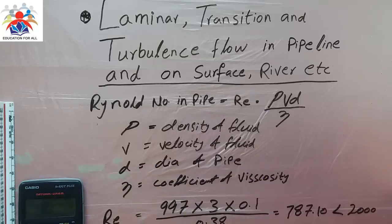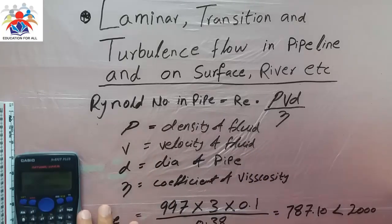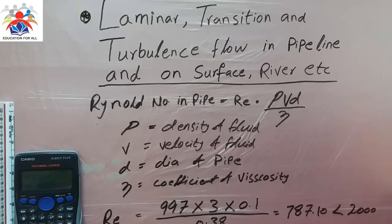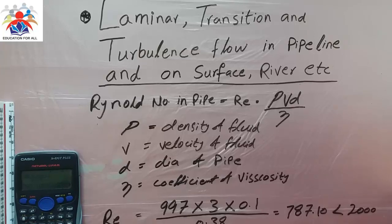Now if we have to calculate the Reynolds number in a riverbed, the formula is slightly different. The Reynolds number equals density of fluid multiplied by velocity of fluid multiplied by a length, divided by the coefficient of viscosity. Instead of diameter we use a length. Obviously we cannot calculate the whole length of the river — we just need to take an initial segment, such as 10 meters, 5 meters, or 3 meters.